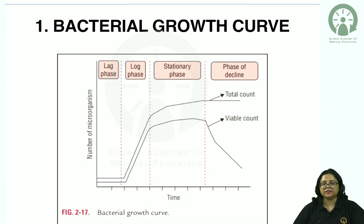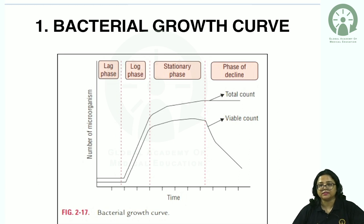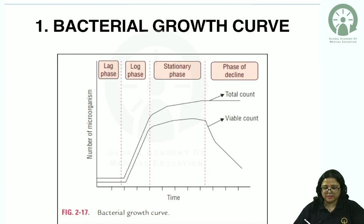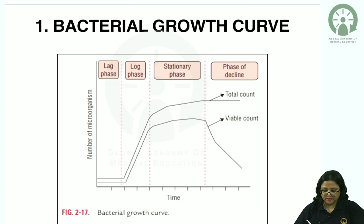In the lag phase, the bacteria is getting familiar with the unknown environment. It will increase in size and start producing more metabolites and enzymes. There is no increase in number of bacterial cells during the lag phase — the bacteria only multiply in size and reach maximum size.